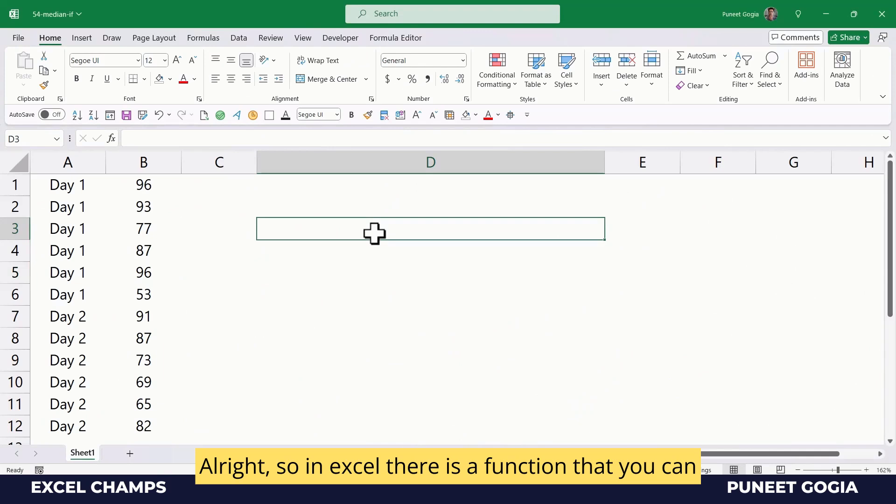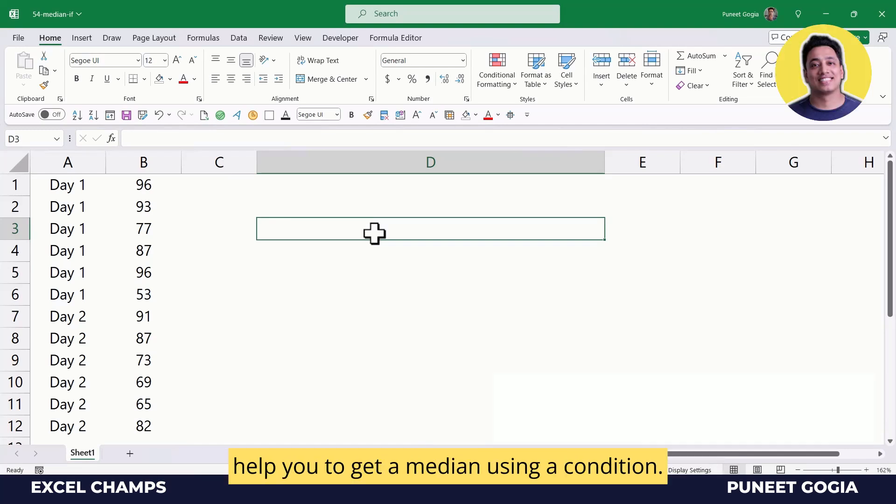In Excel, there is a function to calculate median, but there is no function to get a median using a condition. In this data, I have two columns. The first column has Day 1 and Day 2, and the second column has a few numbers.